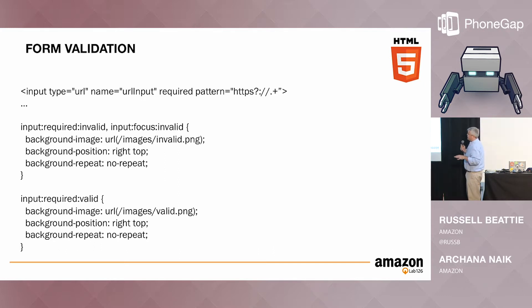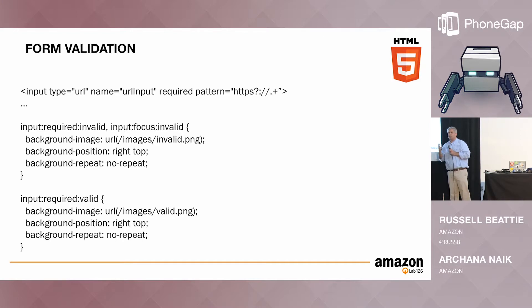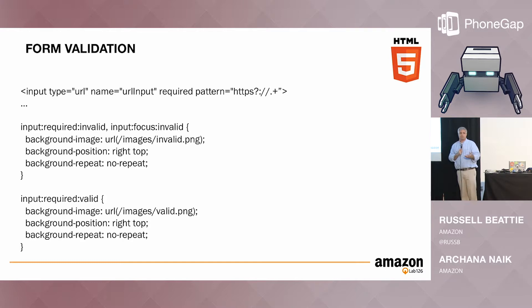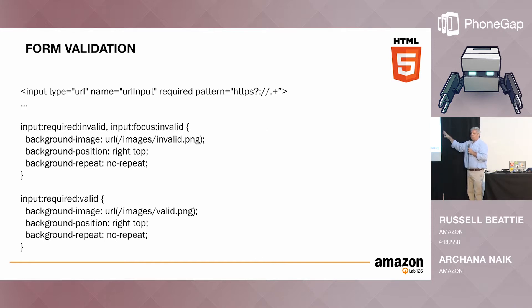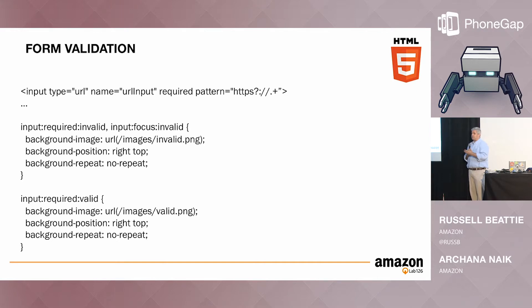Form validation is a nice time-saver that isn't even in the Android KitKat WebView. You can use the 'required' attribute and a 'pattern' in the HTML tag with CSS hooked up to it, so you don't have to write JavaScript to validate that a URL field has a URL or an email field has an email — giving the user immediate feedback without custom JavaScript.